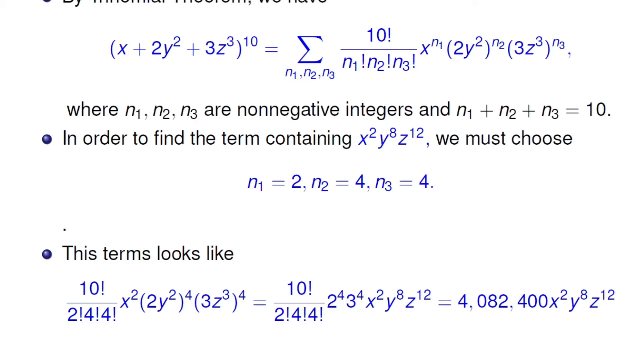That is, 10 factorial over 2 factorial times 4 factorial times 4 factorial, 2 to the power 4, 3 raised to power 4, x squared, y raised to power 8, z raised to power 12.